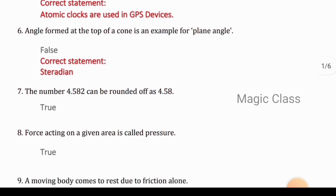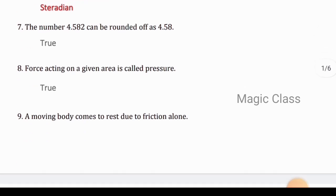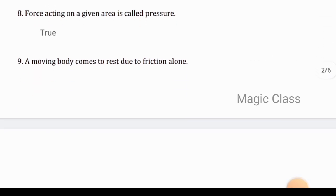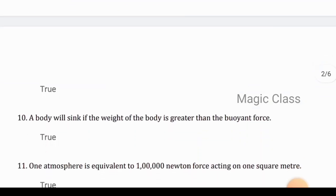Question 6: Angle formed at the top of a cone is an example of plane angle. Answer is false, because it is steradian. Question 7: The number 4.582 can be rounded off as 4.58. Answer is true. Question 8: Force acting on a given area is called pressure. Answer is true.